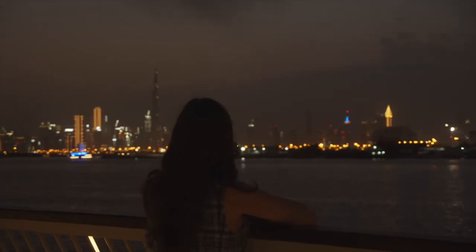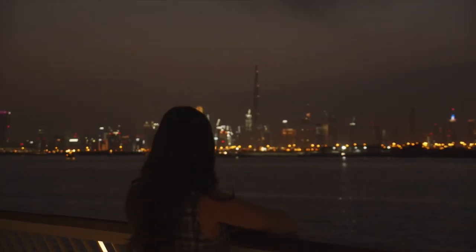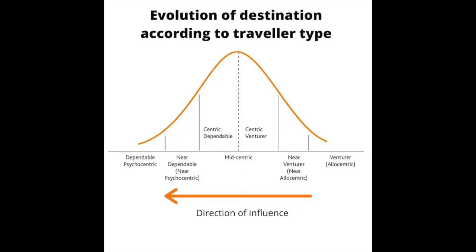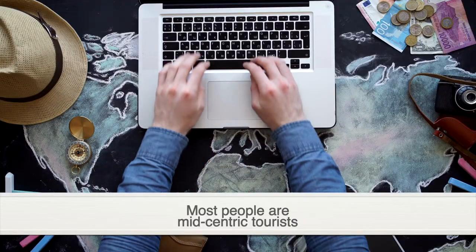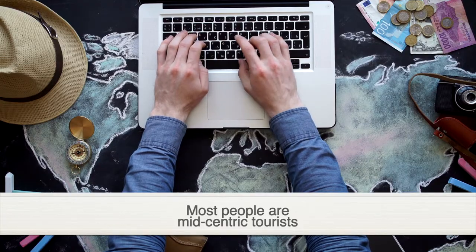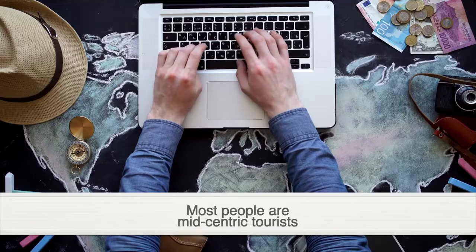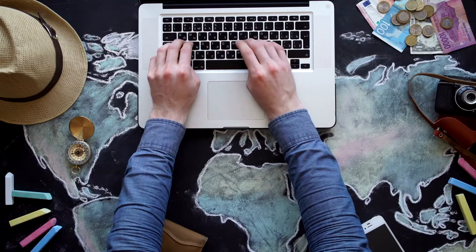Because Plog's model is essentially a spectrum, you don't have to be one or the other — you can sit somewhere in between. There is also something called the mid-centric tourist. The reality is that not many tourists neatly fit into either the allocentric or psychocentric category, which is why Plog developed a scale. The largest category of tourists falls somewhere within the mid-centric category. Mid-centric tourists like some adventure but also some home comforts. Perhaps they book their holiday themselves through dynamic packaging but spend the majority of their time in their resort, or they book an organised package but choose to break away from the crowds and explore the local area.